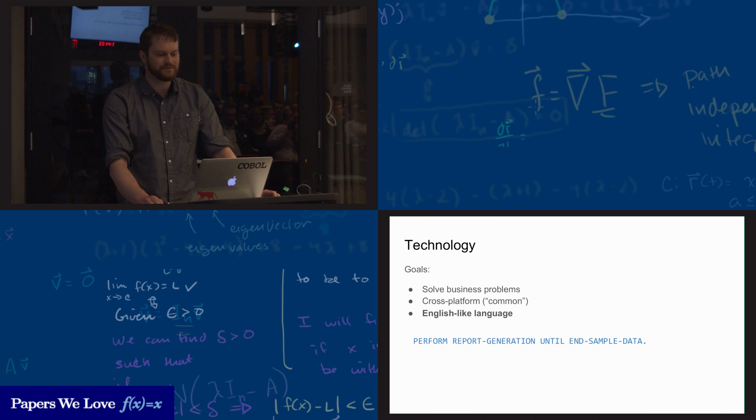There was a desire to have an English-like language because it was thought that having an English-like language would broaden the number of people who could communicate a problem to a computer. I have an example of a perform statement here: Perform report generation until in sample data. You can kind of pretend like that's an imperative English sentence, maybe somebody yelling at you. But you can kind of read it and say, okay, I maybe have an idea of what this person is rather rudely demanding I do.